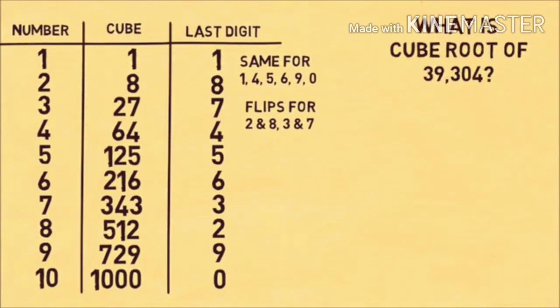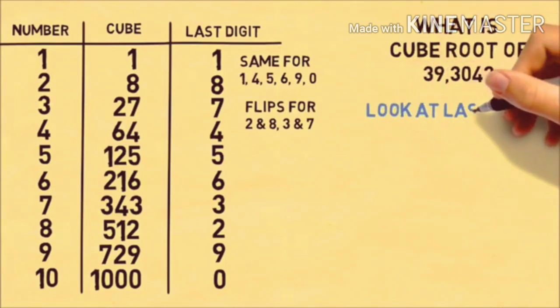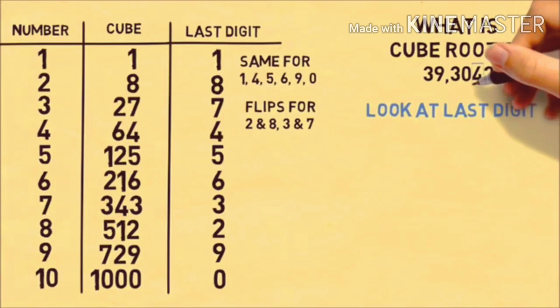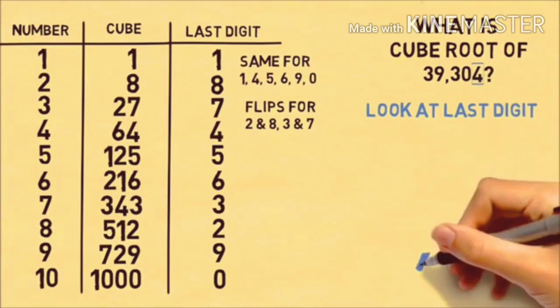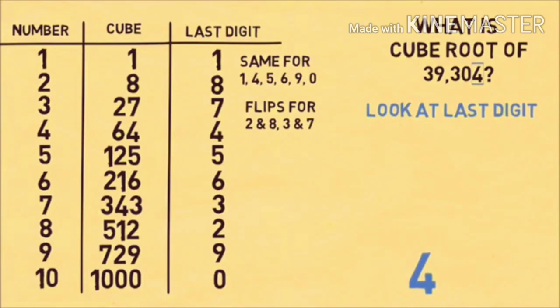Let's do the trick. What's the cube root of 39,304? The first thing you do is look at the last digit. The last digit of 39,304 is 4. We look up 4 in the last digit column, and that corresponds to the number 4. So we write down 4.